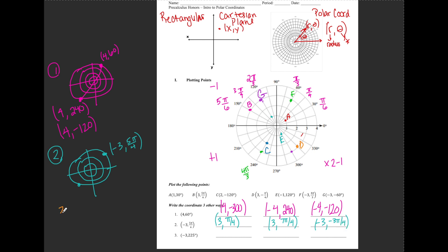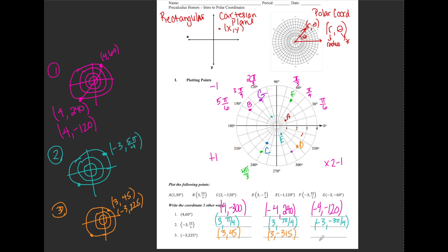For number 3, the point (-3, 225°) — since (3, 225°) is in the third quadrant, (-3, 225°) is in the first quadrant with reference angle 45°, so it's also (3, 45°). Finding the negative angle to 45°: that's (3, -315°). And negating the radius with the negative angle to 225°: 360 - 225 = 135°, giving (3, -135°).